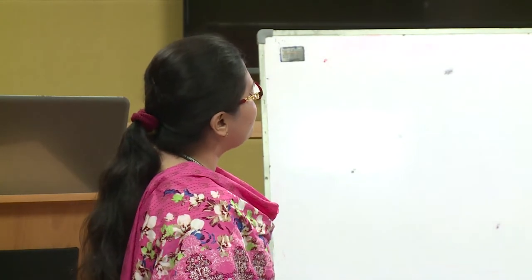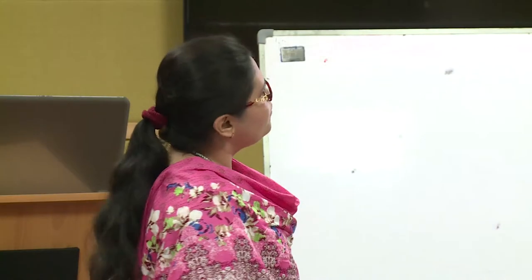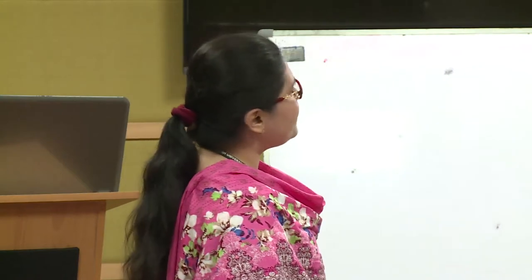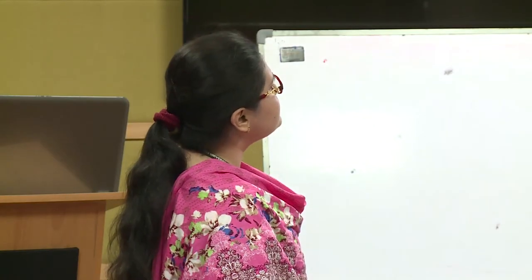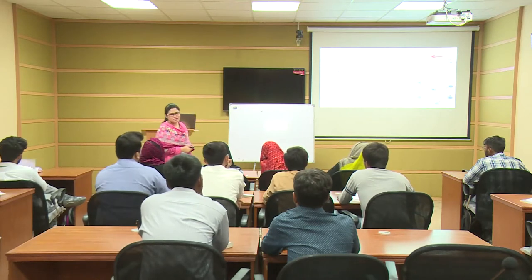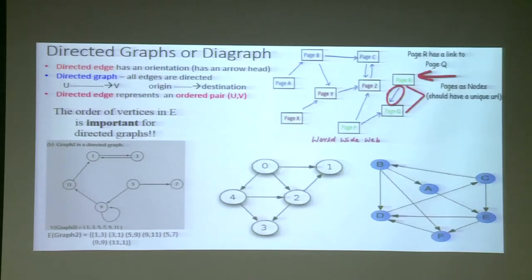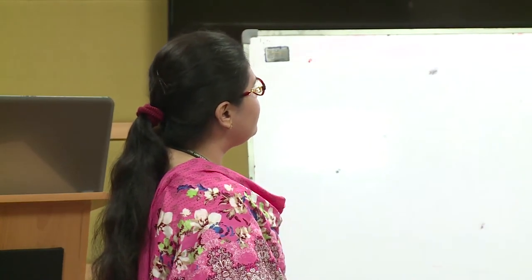The set of vertices are 1, 3, 11, 9, 5, and 7. For edges, note the directions: 1 to 3 and 3 to 1 are bidirectional, represented as (1,3) and (3,1). The first value is origin and second is destination. Similarly, (11,1), (9,9) because 9 is directed towards itself, (9,11), (5,9), and (5,7). This is the representation of a directed graph.